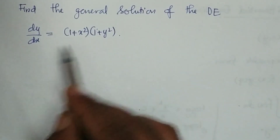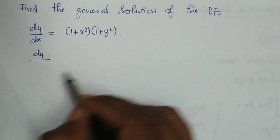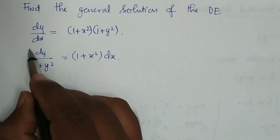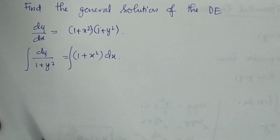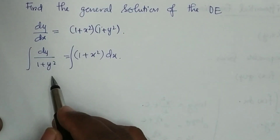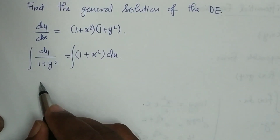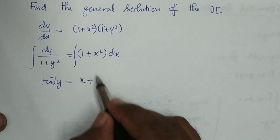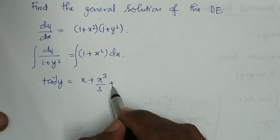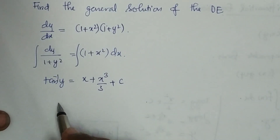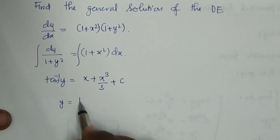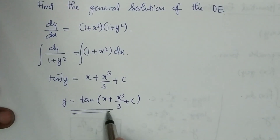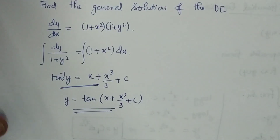Next example: (1 + y²)dy = (1 + x²)dx. Integrating both sides — with respect to y on the left and with respect to x on the right — we get tan⁻¹(y) on the left, and x + x³/3 + c on the right. So the answer is tan⁻¹(y) = x + x³/3 + c. This again uses the variable separable formula.